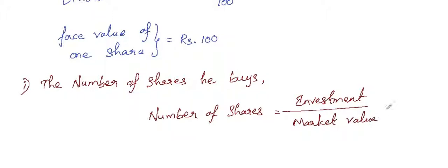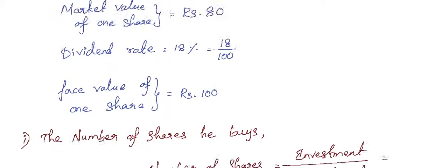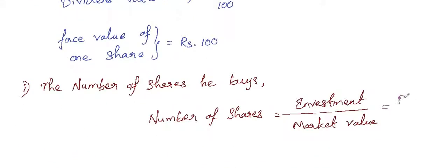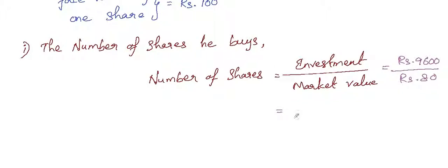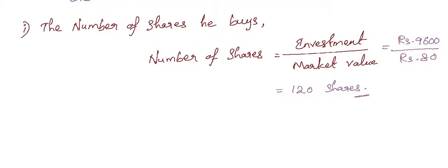The investment amount is Rs. 9,600 and the market value or share value is Rs. 80, so if we divide 9,600 by 80, we'll get 120. So the number of shares he buys is 120.